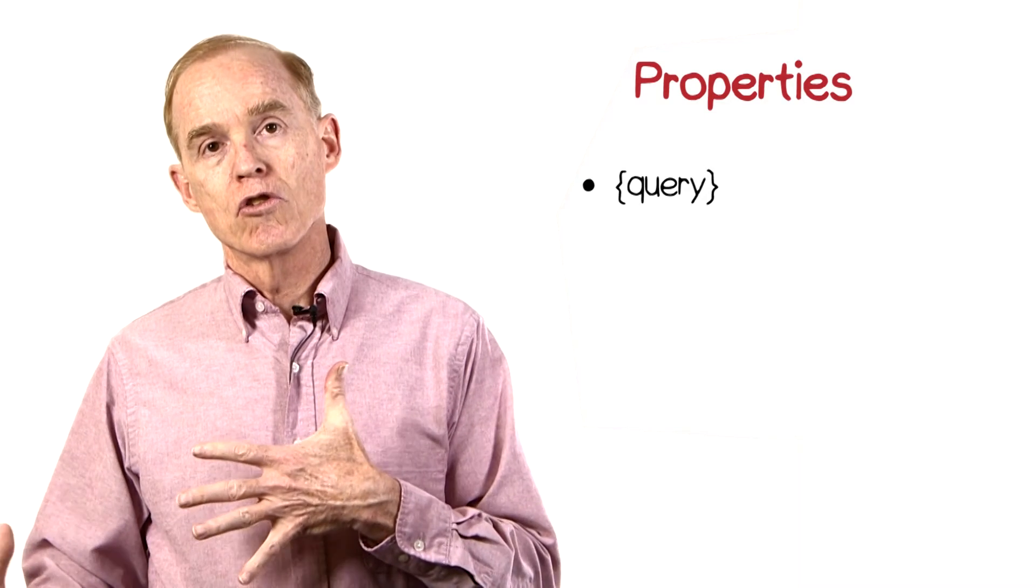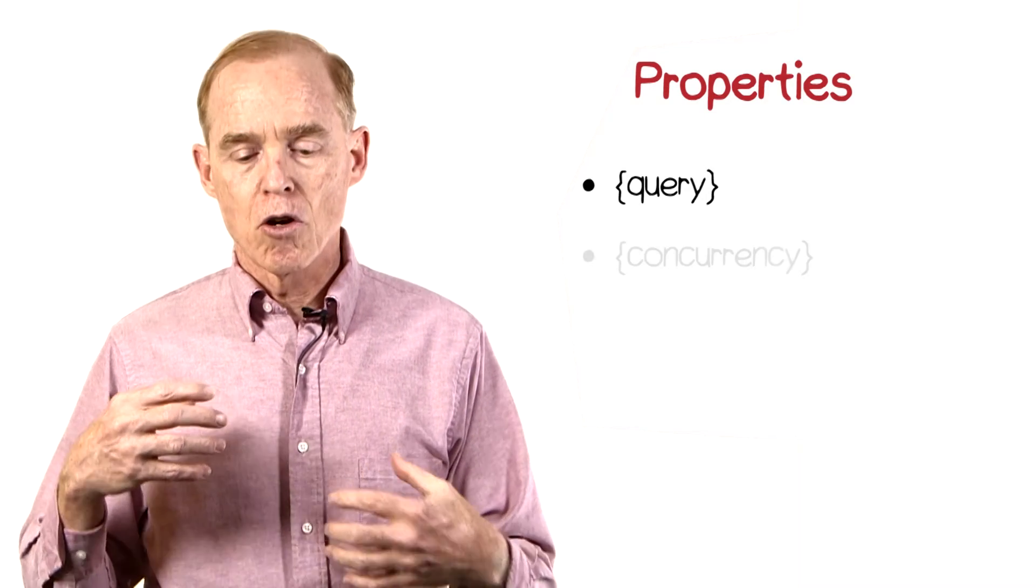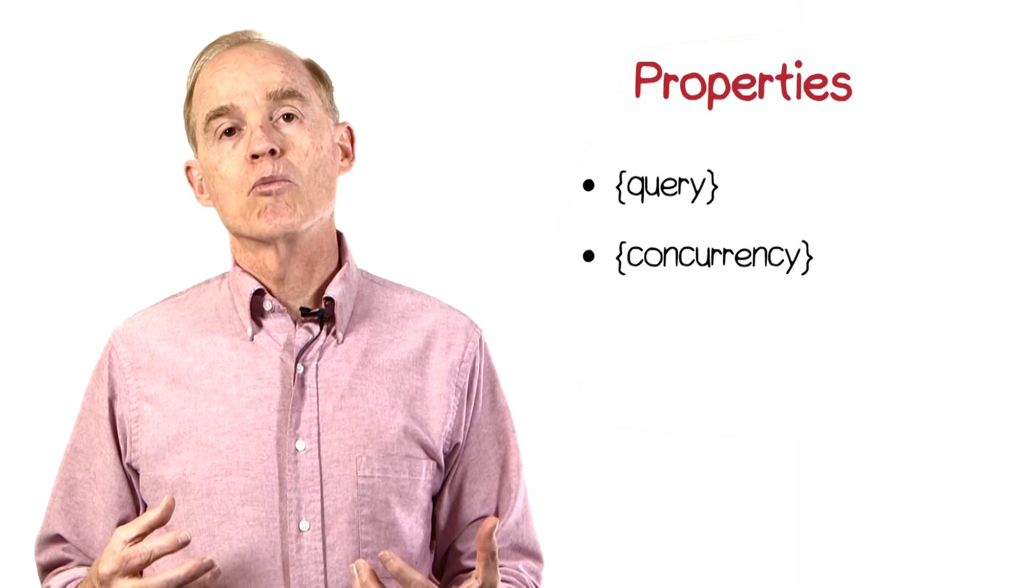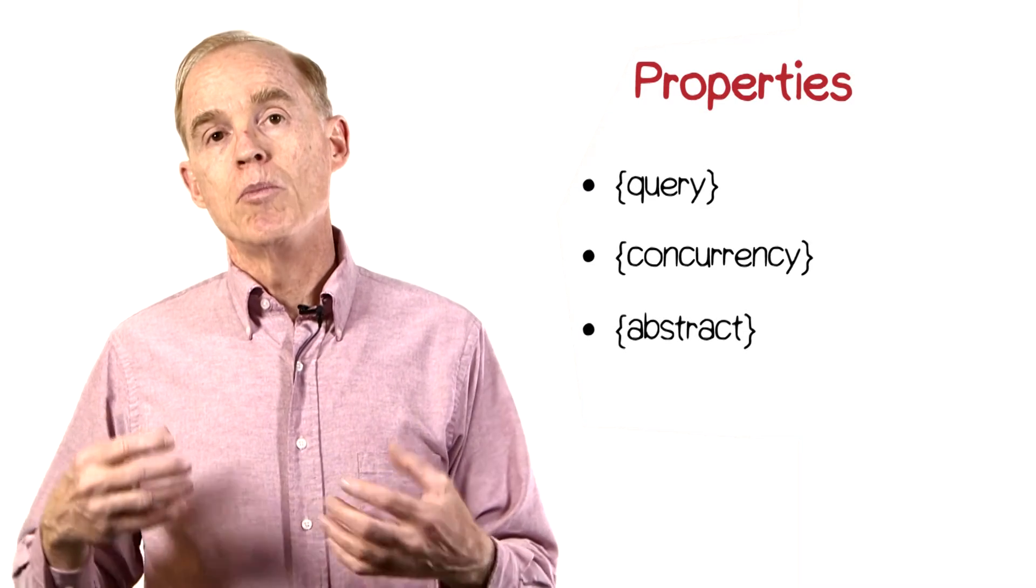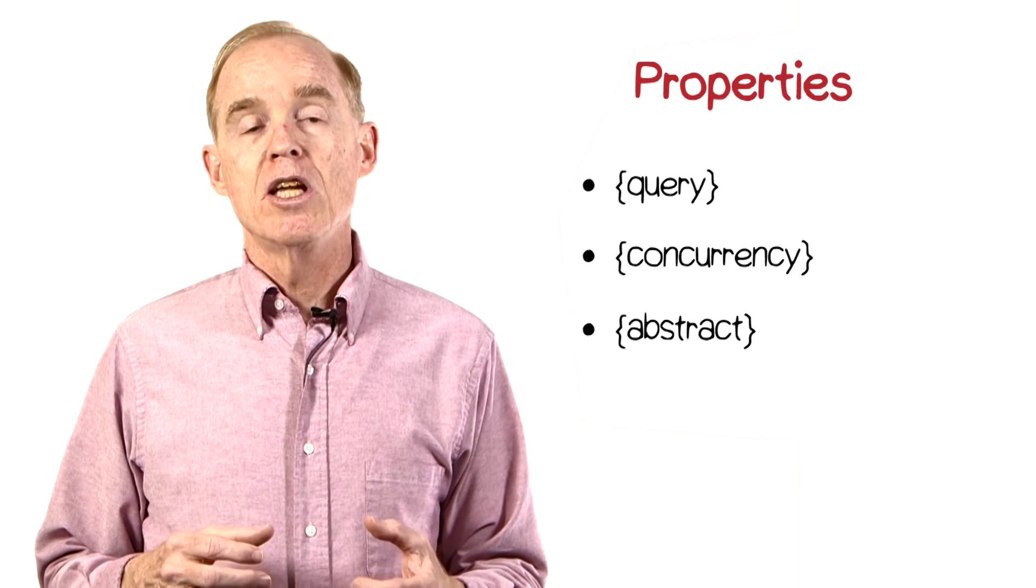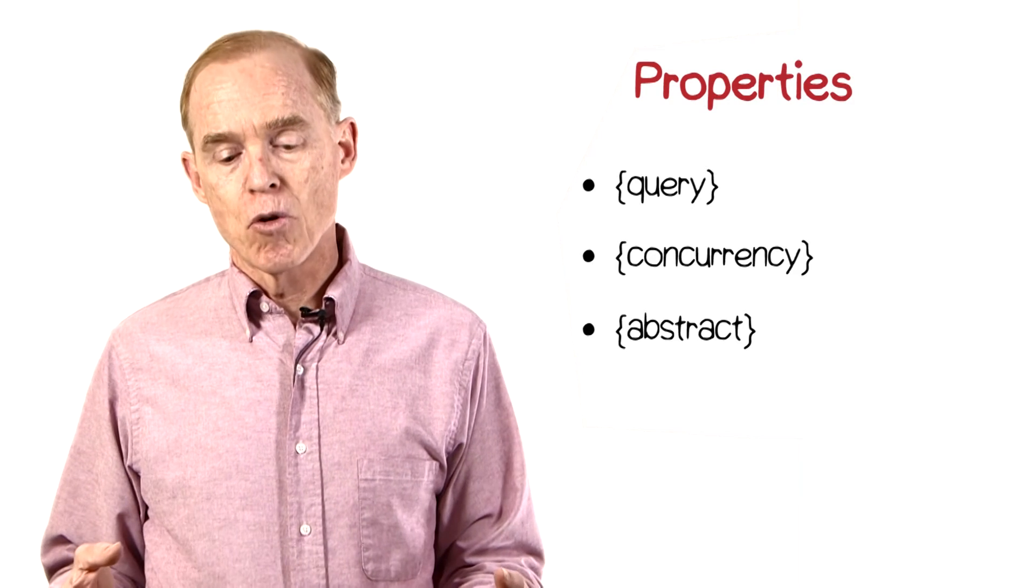There's properties describing concurrency. There's properties describing whether or not this particular operation is abstract, as would be seen in an abstract method in an object-oriented language.